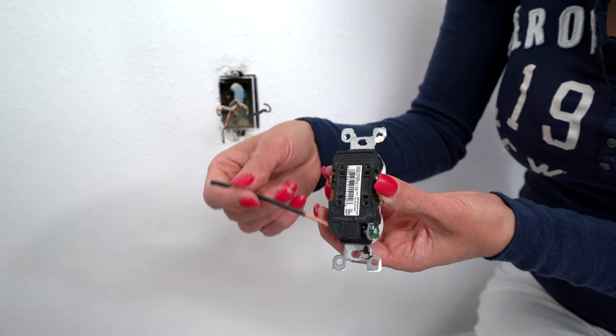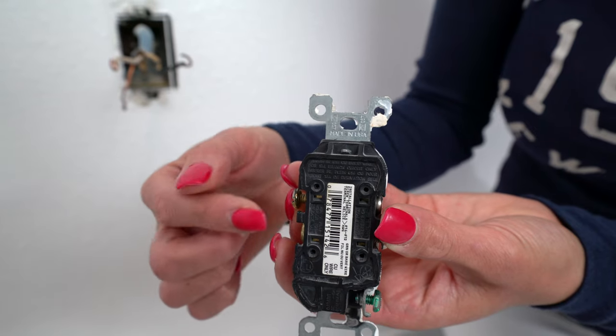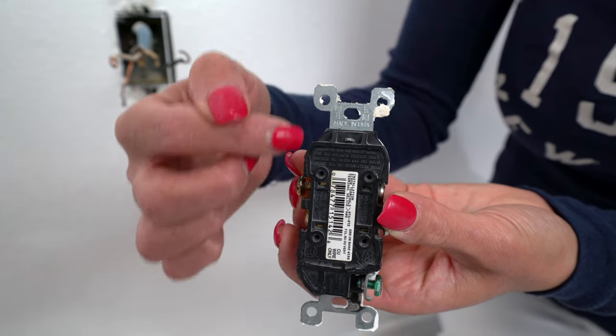On the back of the outlet, it usually has a gauge that shows you the exact length the wire needs to be stripped. Right there. And it also tells you which side is hot. So this side is hot.